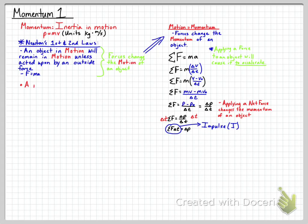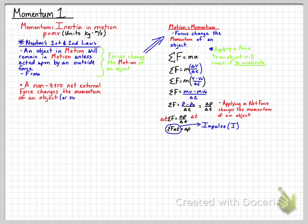In a general summary: a non-zero net force changes the motion of an object or a system of objects. More specifically, a non-zero net external force — an outside force, not an internal force — changes the momentum of an object or of a system of objects. It's easier to deal with individual objects first, then move forward to the system of objects, which we'll cover a little bit later.